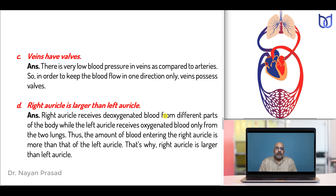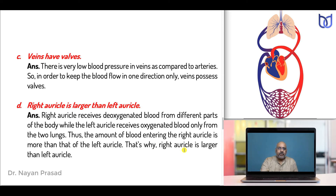Why is the right auricle larger than the left auricle? The right auricle receives deoxygenated blood from different parts of the body, while the left auricle receives oxygenated blood only from the two lungs. Thus, the amount of blood entering the right auricle is more than that entering the left auricle — that is why the right auricle is larger.